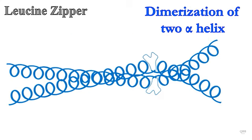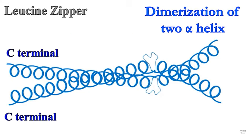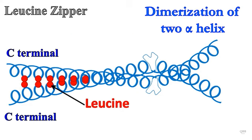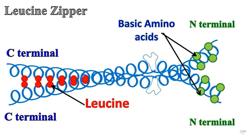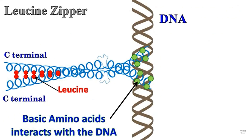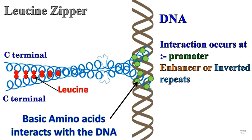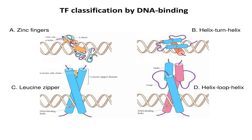The leucine zipper involves dimerization of two alpha helices — you can see one alpha helix and a second alpha helix which are dimerized. Dimerization occurs at the C-terminal domain of the protein, where both alpha helices are linked together with leucine amino acids. At the N-terminal domain, we have basic amino acids — mainly arginine and lysine — which interact with the DNA phosphate-sugar backbone at promoter or enhancer regions, or short inverted repeat sequences, thereby regulating the expression of a particular gene.